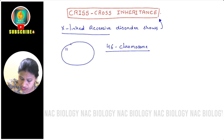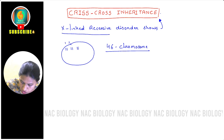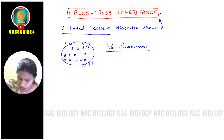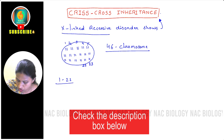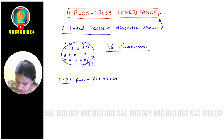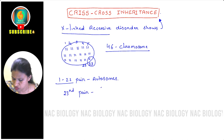So this is one pair, this is the second pair, this is the third pair — like that I can write 23 pairs. Let's assume this is the 22nd pair and this is the 23rd pair. In this set, chromosomes 1 to 22 pairs are considered autosomes, and the last pair — the 23rd pair — is called the sex chromosome.